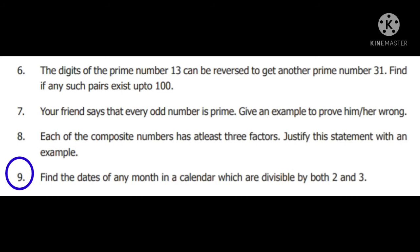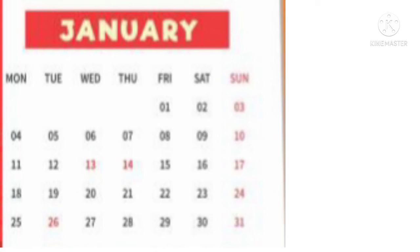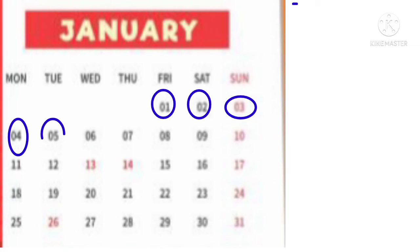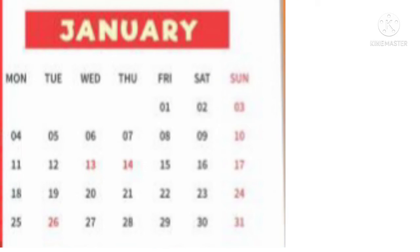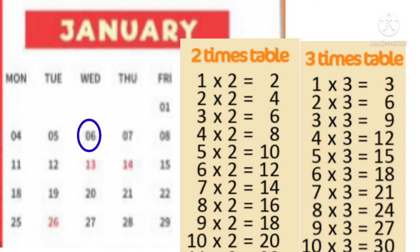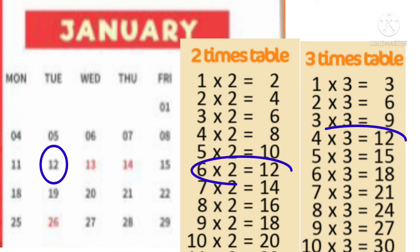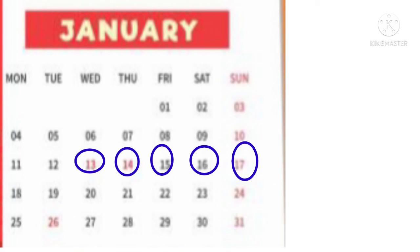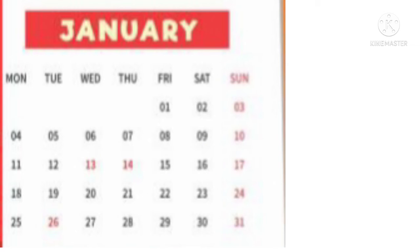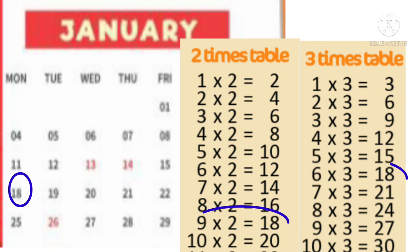Ninth sum: find the dates of any month in a calendar which are divisible by both 2 and 3. I will take the month of January, which has 31 days. Numbers 1 to 5 are not divisible by both 2 and 3. The number 6 is divisible by both 2 and 3 – 2×3=6 and 3×2=6. Numbers 7 to 11 are not divisible by both. The number 12 is divisible by both – 6×2=12 and 4×3=12. Numbers 13 to 17 are not. 18 is divisible by both – 9×2=18 and 6×3=18.